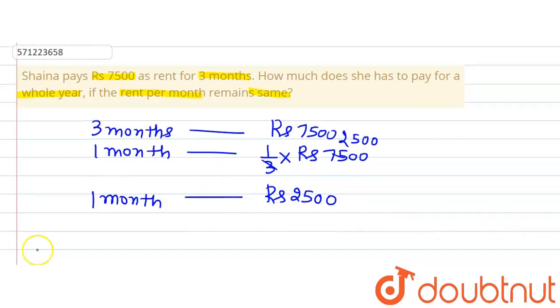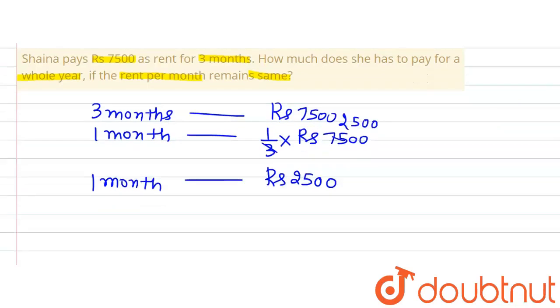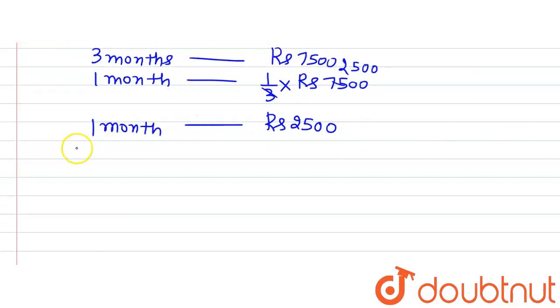Now let's find out the rent for the whole year. In a year there are 12 months, so rent for 12 months will be 12 multiplied by rent for 1 month, that is 2,500.